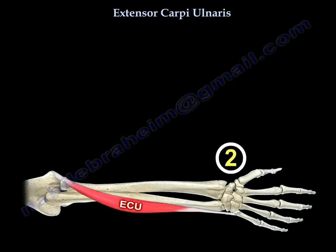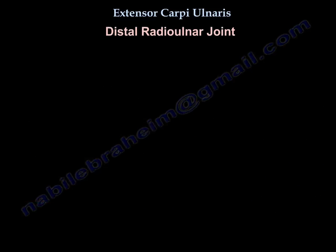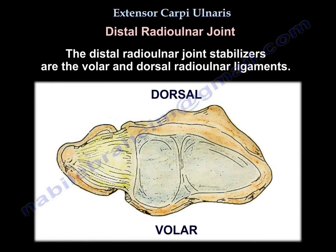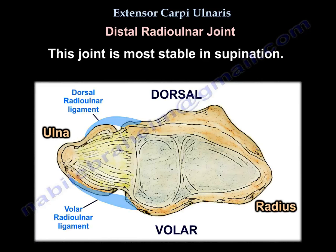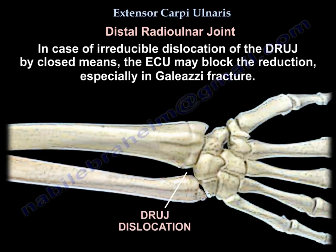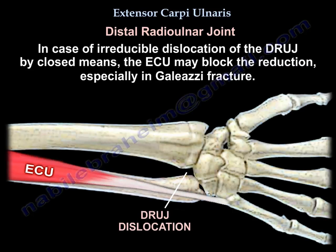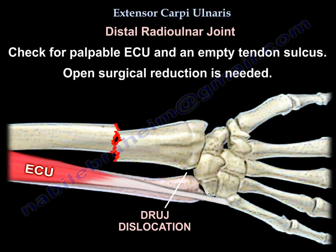Another area related to the extensor carpi ulnaris is the distal radioulnar joint. The distal radioulnar joint stabilizers are the volar and dorsal radioulnar ligaments. That joint is most stable in supination. In cases of a reducible dislocation of the distal radioulnar joint by closed means, the extensor carpi ulnaris tendon may block the reduction, especially in Galeazzi fracture. Check for a palpable extensor carpi ulnaris tendon and check for an empty sulcus — open surgical reduction is needed.